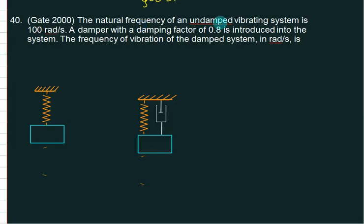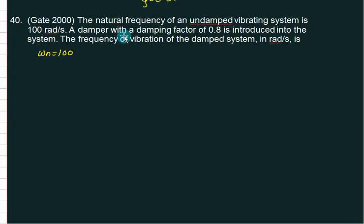The natural frequency of undamped vibration system is 100. Is it omega N? So write omega N. Damper with a damping factor of 0.8. So is zeta equals to 0.8. Is introduced into the system, the frequency of vibration of the damp system is. So you want to know omega D. Is omega D is omega N under root of 1 minus zeta. Put the value, get the answer.